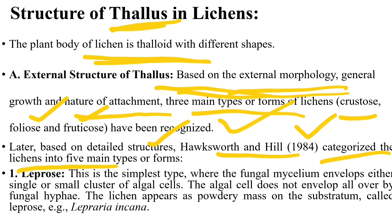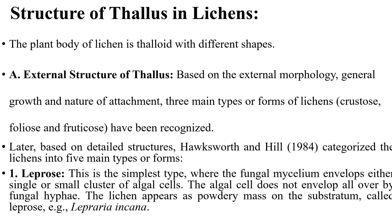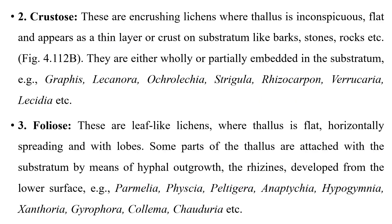The first is the leprose type, which is the simplest type where fungal mycelium envelops either single or small clusters of algal cells. The lichen appears as a powdery mass on the substratum and is called leprose. An example is Lepraria incana.